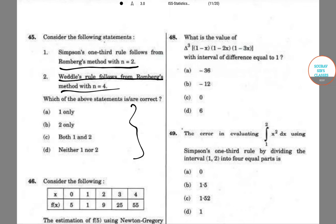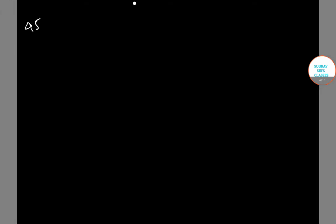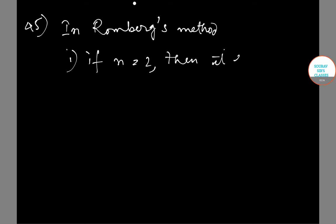Let's see how to approach this. In question number 45, we have in Romberg's method, if n is equals to 2, then it is Simpson's one-third rule.